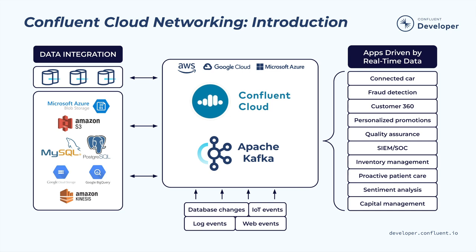During this course, you will learn about the available network connectivity options for connecting your network with a Confluent Cloud network. You will also learn about the benefits of each option as well as any trade-offs that need to be considered. At the end of this course, you will be better prepared to decide which option is right for you.